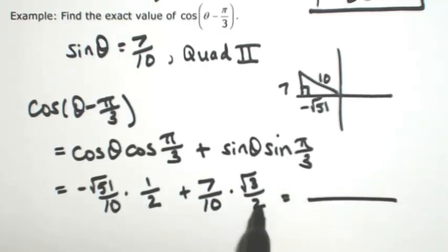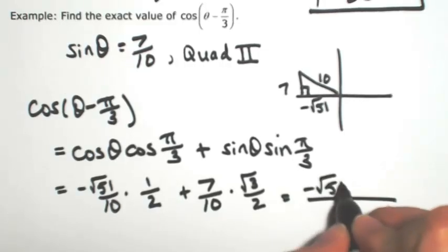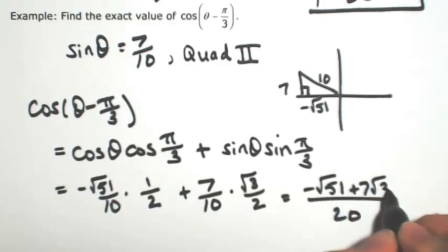So getting a common denominator is going to be 20 on both of those. So that's our common denominator. So I get the negative square root of 51 plus 7 square root of 3.